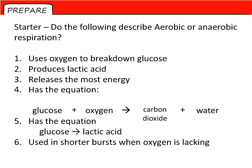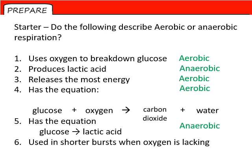Question one: what uses oxygen to break down glucose is aerobic respiration. The type that produces lactic acid is anaerobic respiration. The type that releases the most energy is aerobic respiration. The equation glucose plus oxygen produces carbon dioxide plus water is aerobic respiration. The equation glucose converted to lactic acid is anaerobic respiration. Finally, the type of respiration used in shorter bursts when oxygen is lacking is anaerobic respiration.